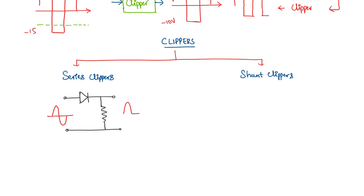if you look at this circuit, it has clipped the negative portion of the waveform. And we call this a series clipper because the output waveform taken is in series with the diode.